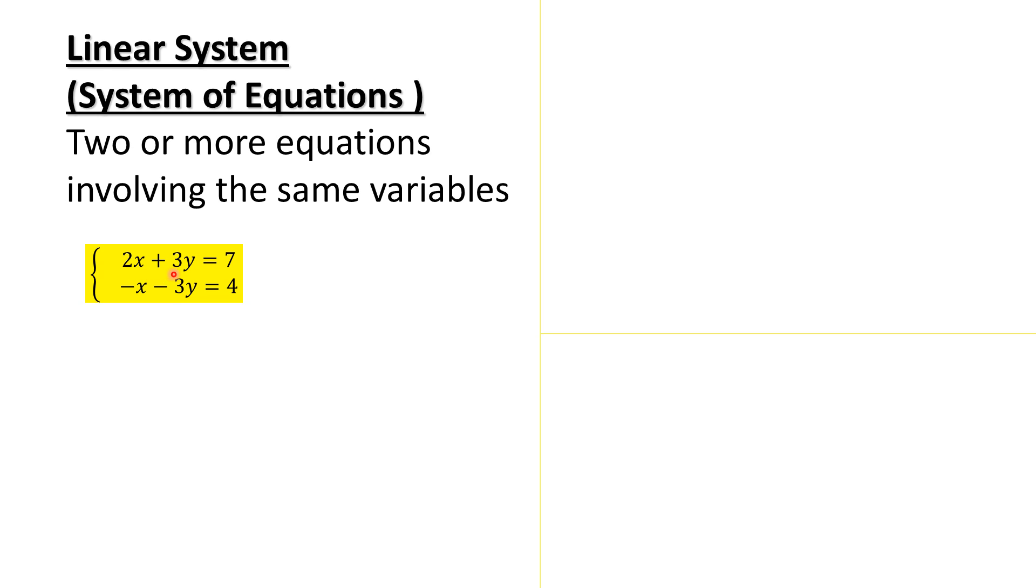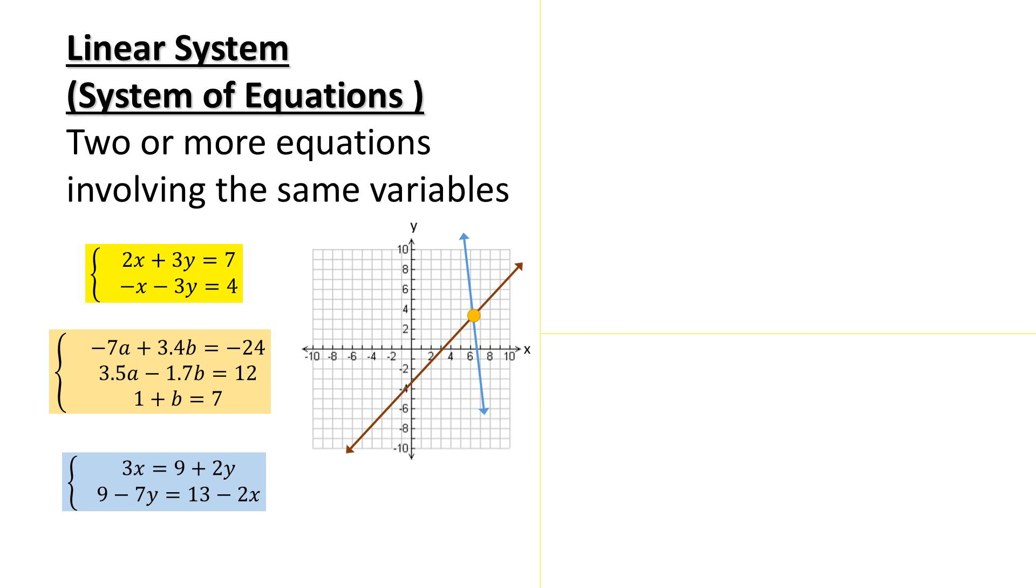And as you see here, you have the variables x and y. You can also have three equations and you can use other variables, a and b in this case. You can have variables on the left or the right side mixed up a little bit. Sometimes a linear system can be represented by a graph and even a matrix.